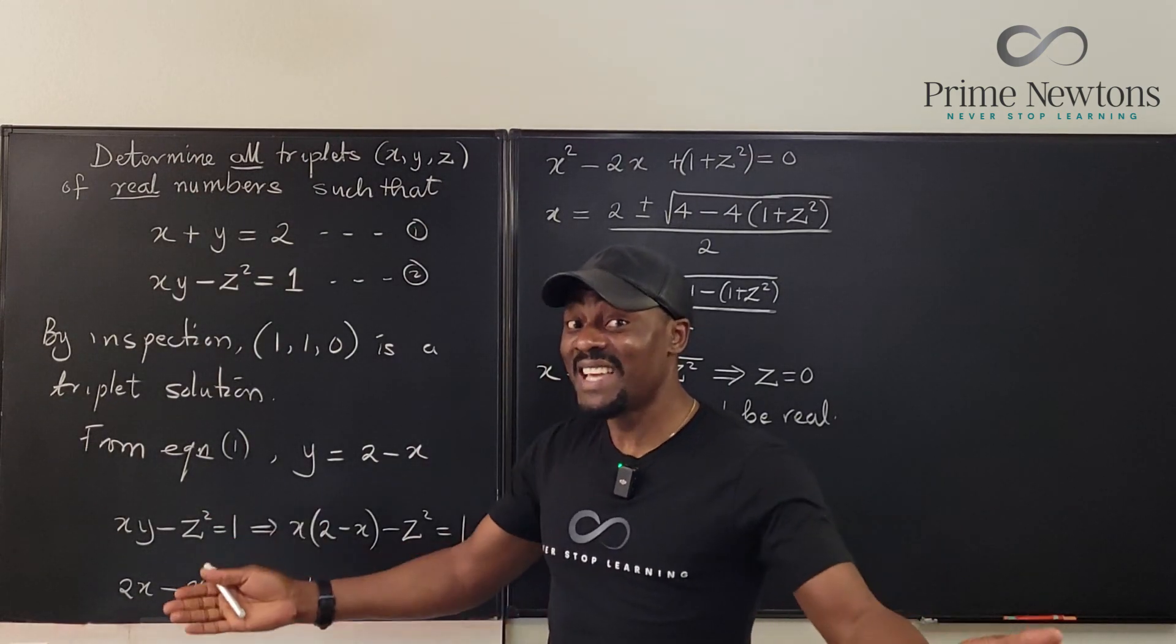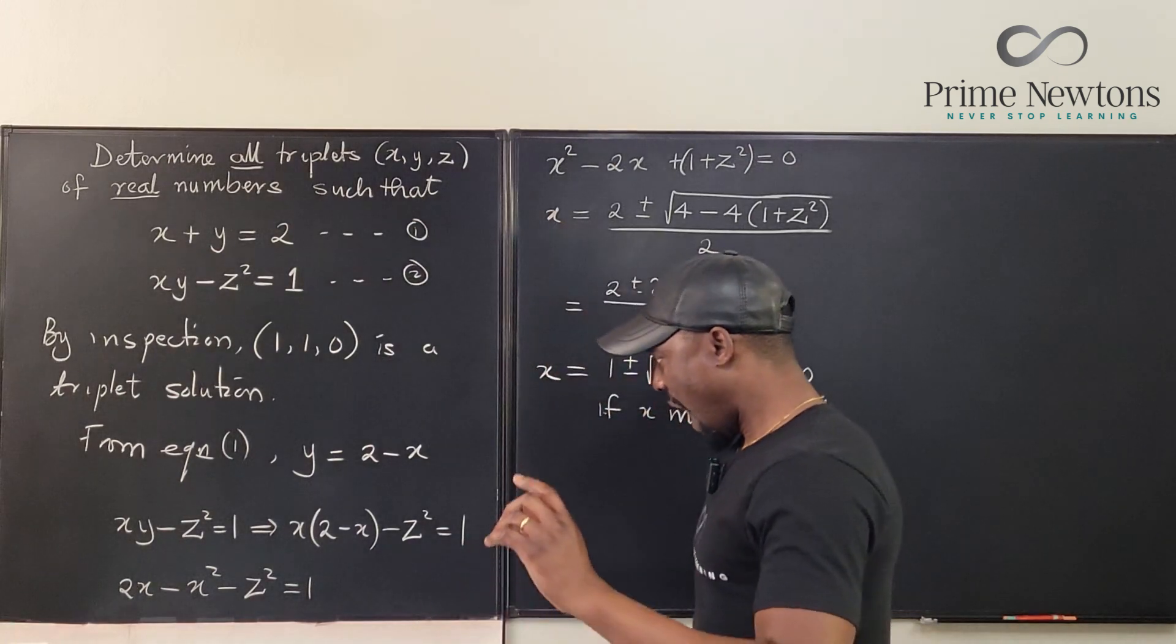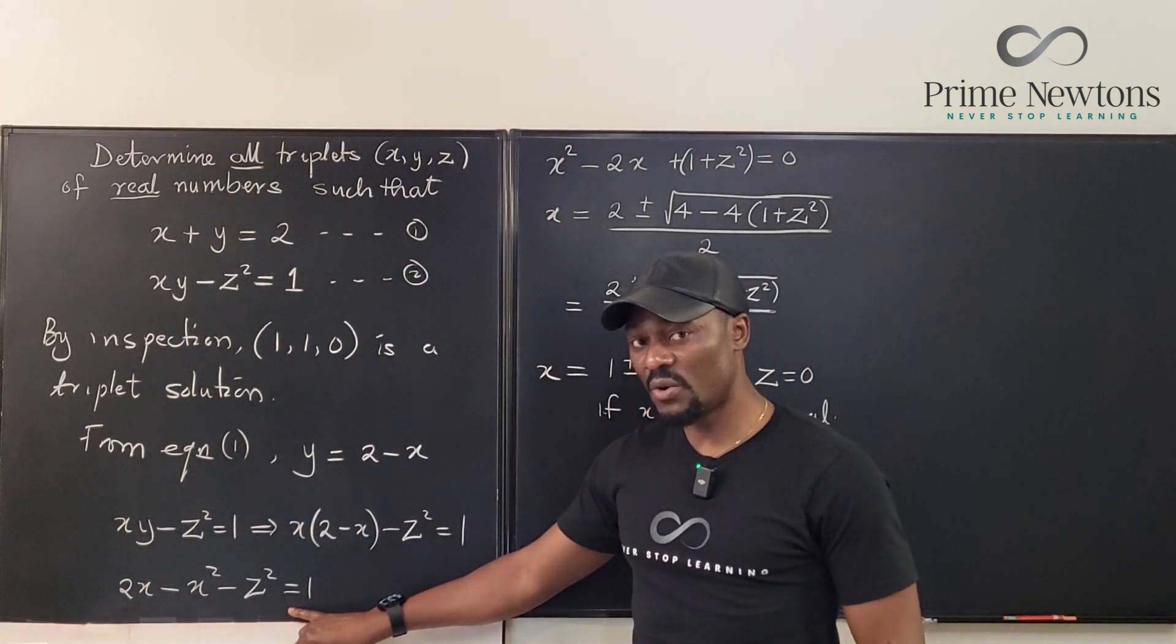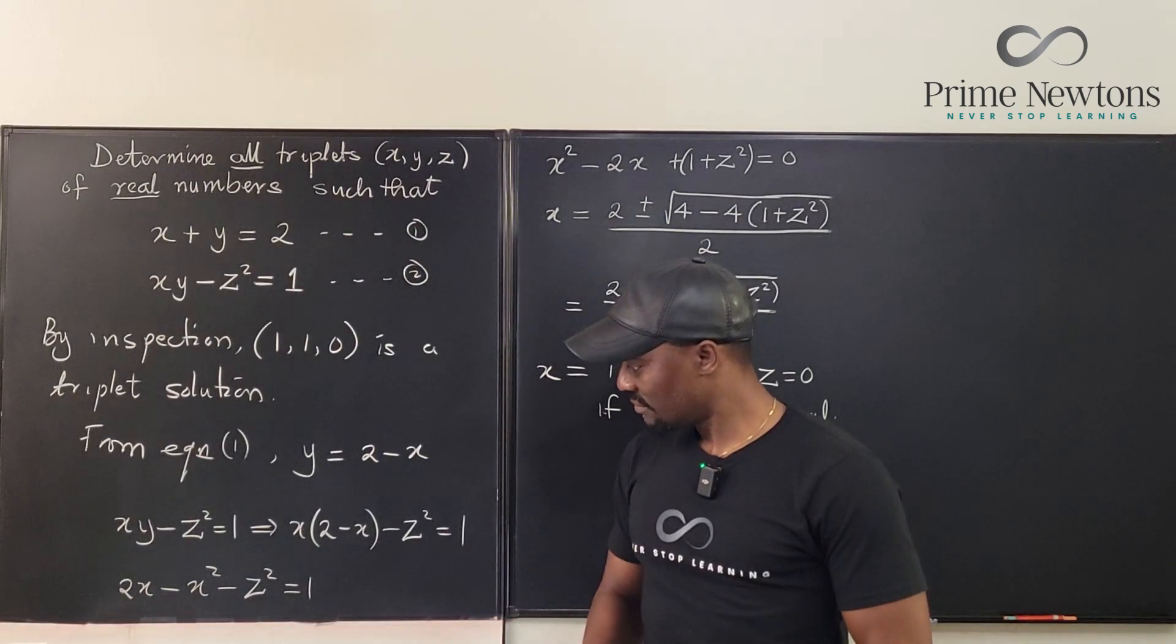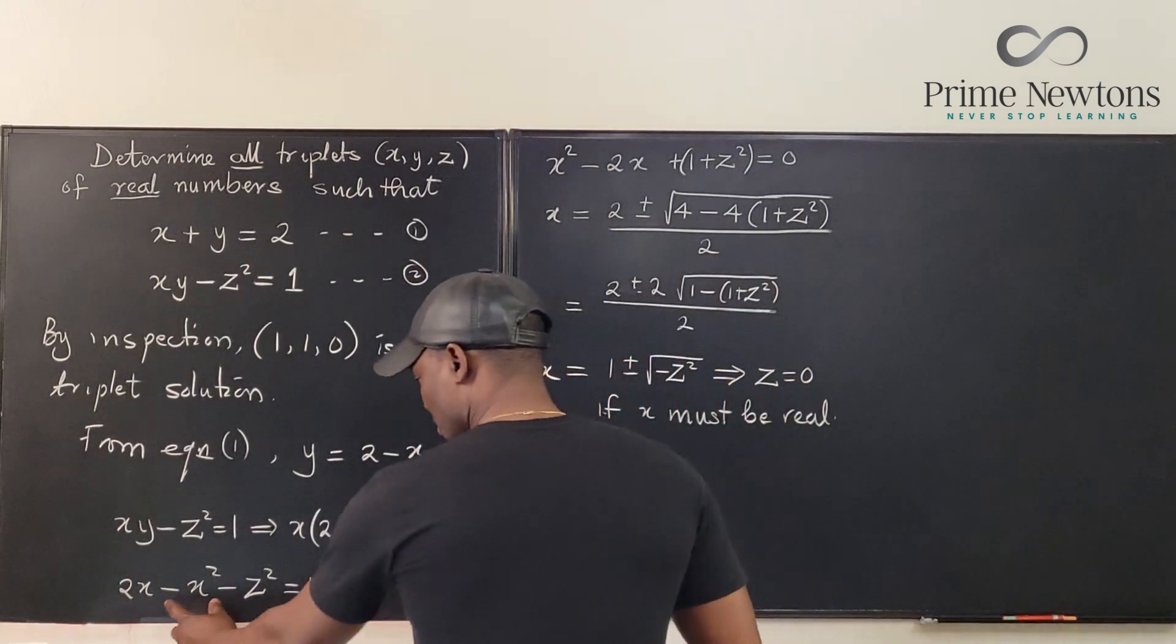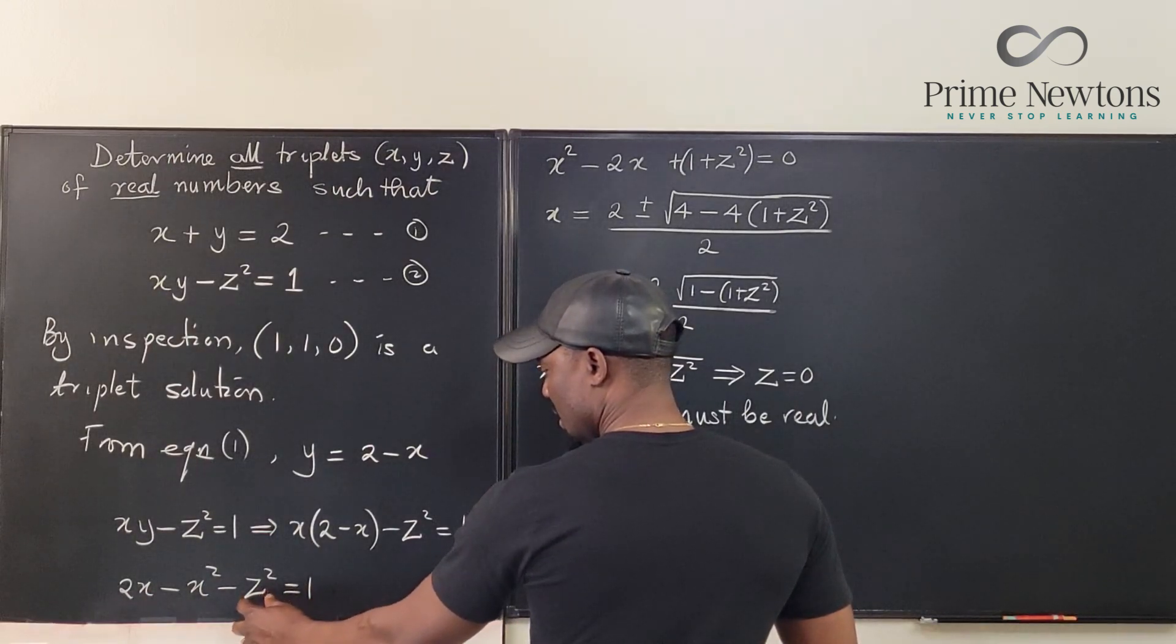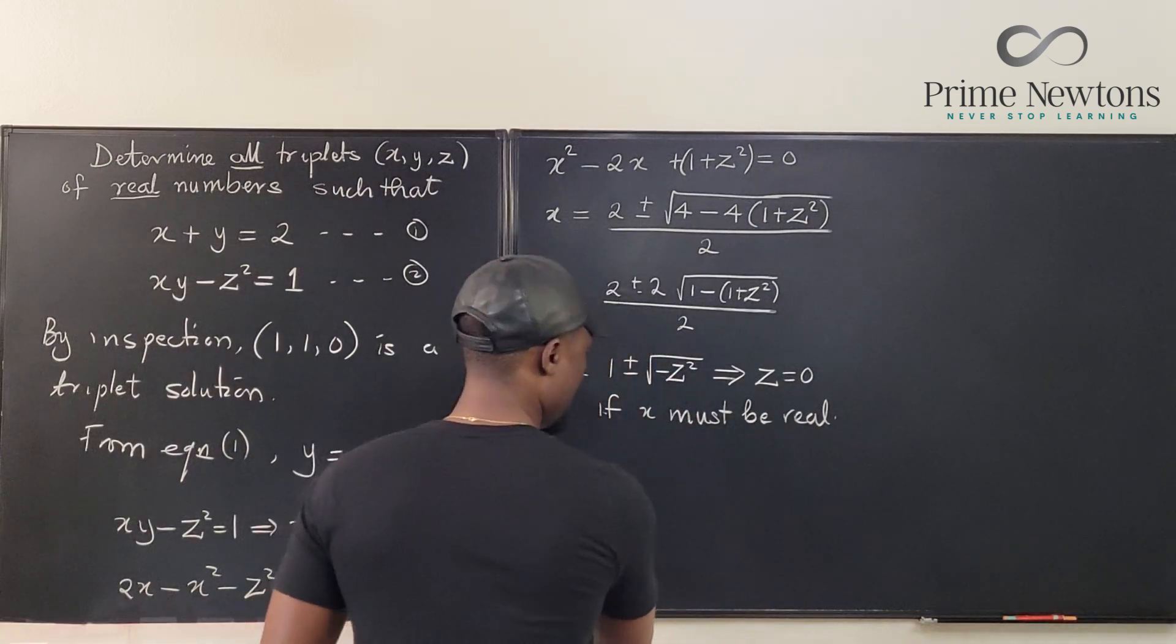Is there anything else we can say? Is there another way? I thought about this equation again, and I thought, what if I don't solve a quadratic equation? What if I just make a claim that if I rearrange this, I bring this here, and I leave... how do I put it? Let's move z to this side.